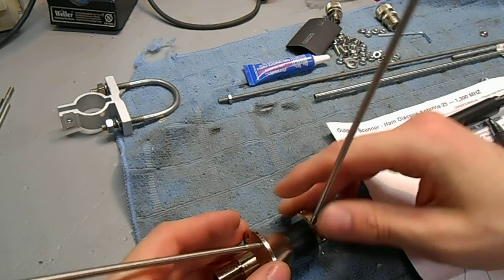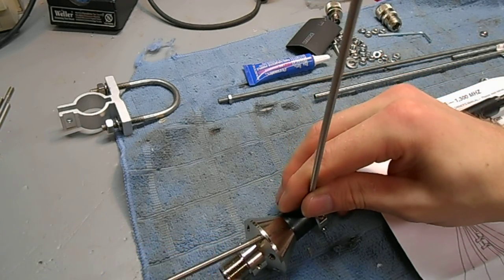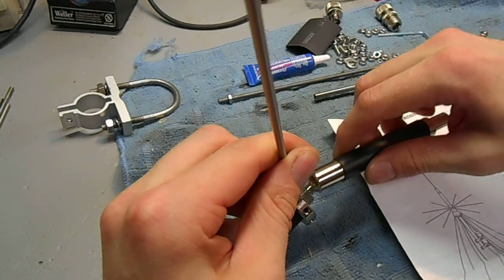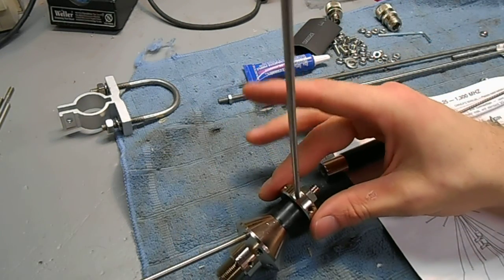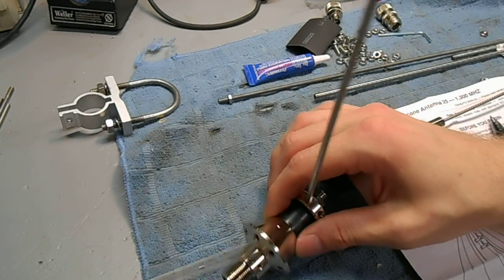After you kind of line the cone element and the disc element in line like that. And then when you tighten down the top nut or the top loading coil. That just helps increase the performance of the antenna.